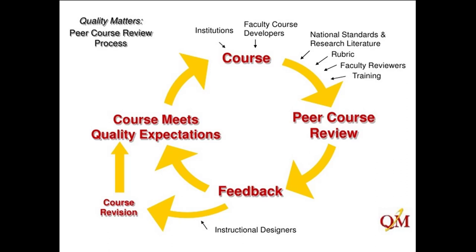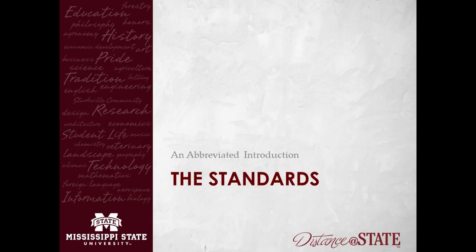This is a good screenshot of the continuous process of Quality Matters and how the system works. You develop your course based on the literature; you can use the rubric. We have faculty reviewers — hopefully peer reviewers in your own department — look at it and give you feedback. Then it comes down to having it looked at by us, we give you feedback, it goes through a course revision process and completes the circle again. The last thing you want is stagnant courses. This diagram shows the process well.